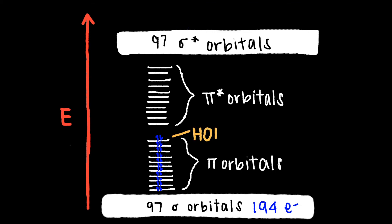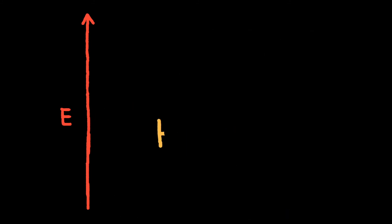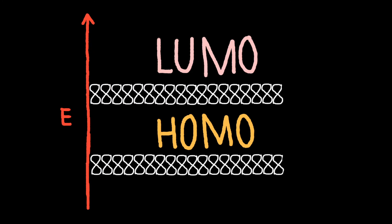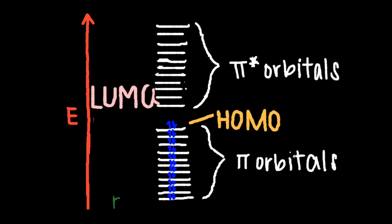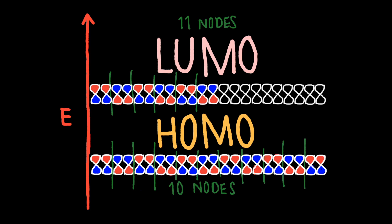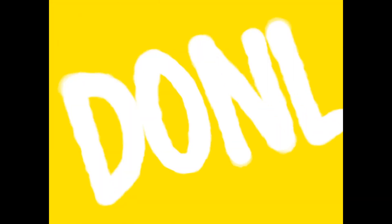We can identify the highest occupied molecular orbital (HOMO) and the lowest unoccupied molecular orbital (LUMO). Next, we are going to draw out the 22 pi-orbitals. The energy difference between the HOMO and the LUMO depends on the number of nodes. As you go up in the number of nodes, you increase in energy. The HOMO has 10 nodes and the LUMO has 11. A node occurs when there is antibonding, so we need to create 10 sites of antibonding in the HOMO to get 10 nodes, and 11 in the LUMO. And we're done.